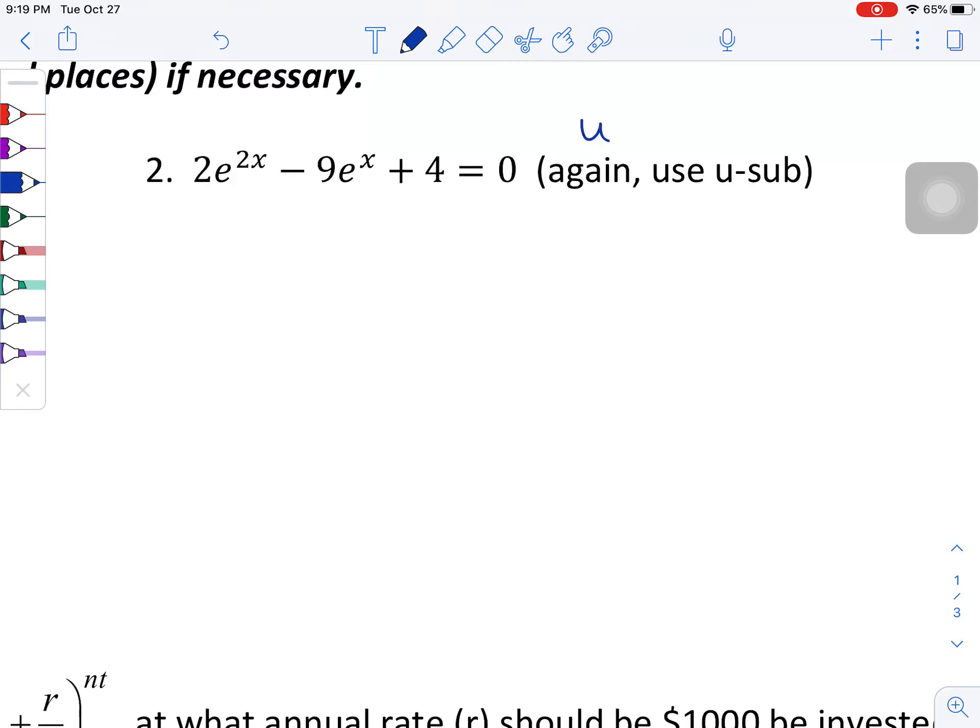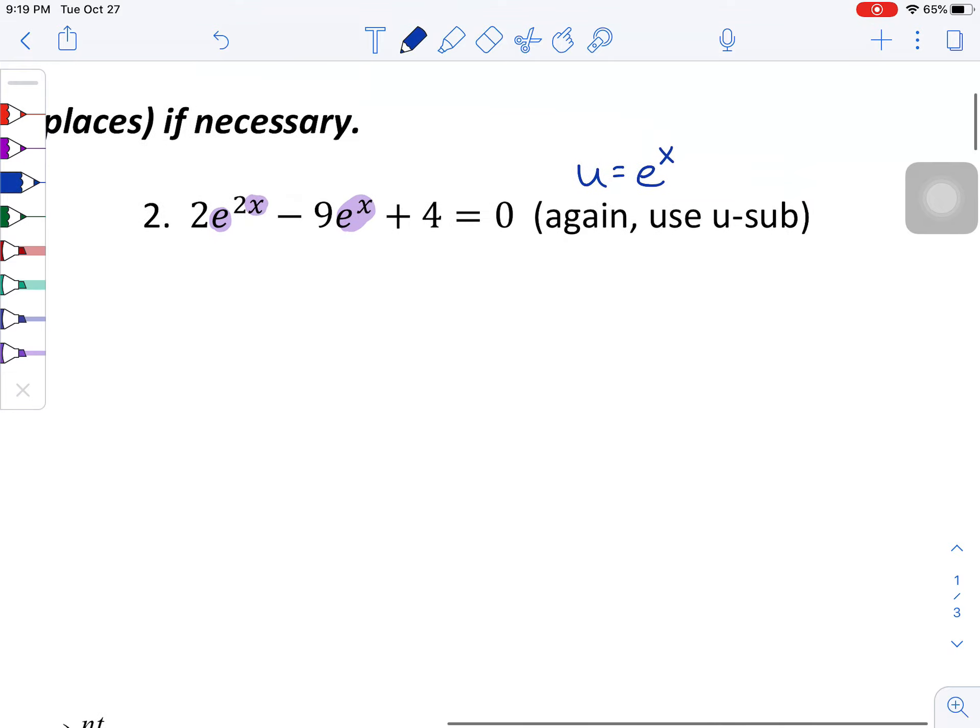In this case, let's go ahead and say u is equal to e to the x. So the obvious one is right here, e to the x, 9 times e to the x. The less obvious but still there is this e to the x right here. Same idea that we had in the last problem. If we had 2 times e to the x squared, we would be able to multiply these two powers together, creating the 2x here, and that coefficient of 2 would just stay 2.